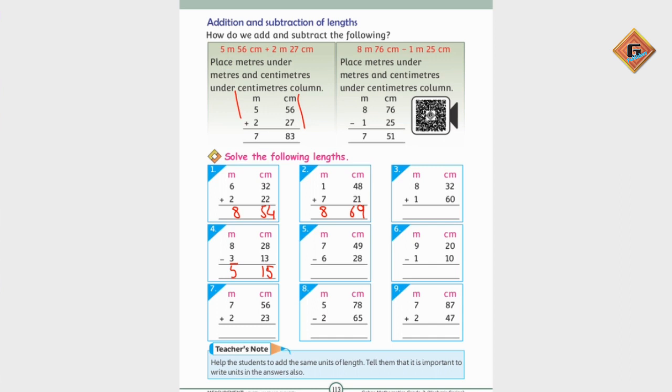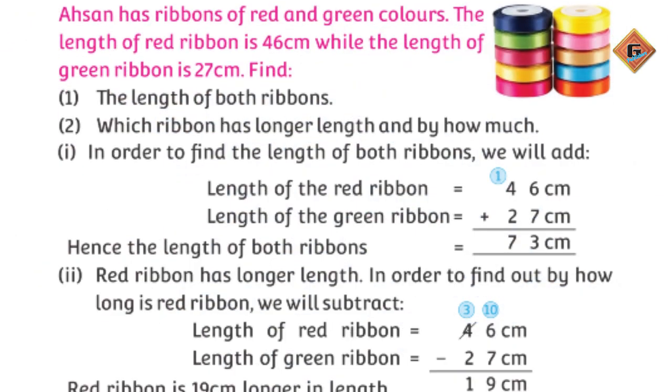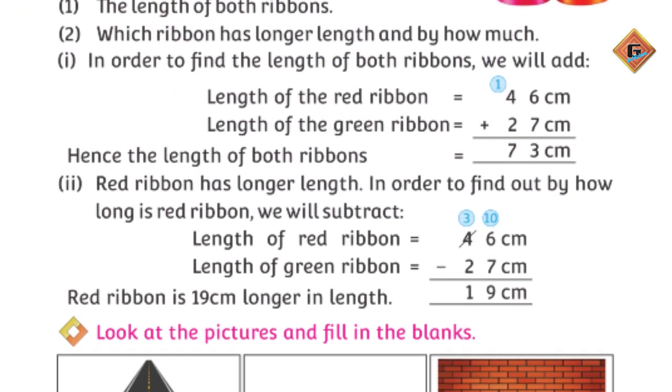Let's see here: 9 minus 8 is 1, 4 minus 2 that is 2, 7 minus 6. So this is 1 meter and 21 centimeter.